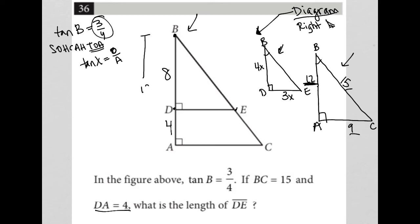which makes the length from B to D equal 8. Because I want this entire length to be 12, I know this part is 4, so this part must be 8.